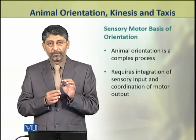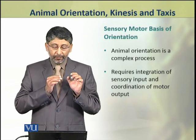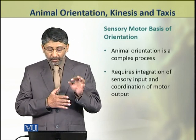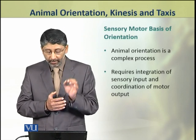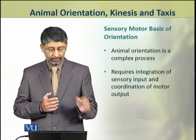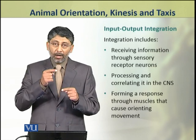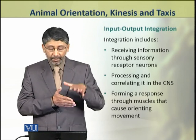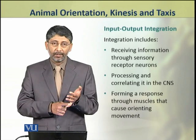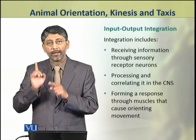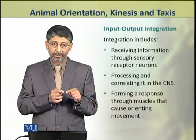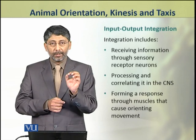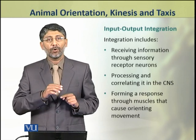Animal orientation has a sensory-motor basis. It is a complex process which requires integration of sensory input and coordination of motor output. This includes receiving information through sensory receptor neurons, then processing and correlating them in the central nervous system, which forms the response performed through muscles that cause the orienting movement.